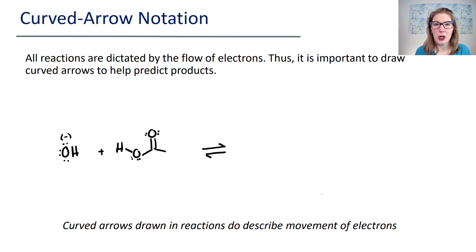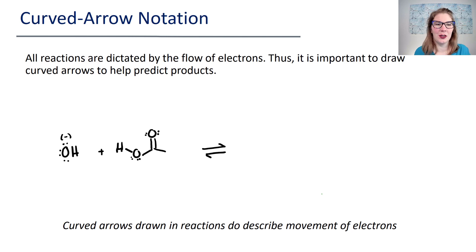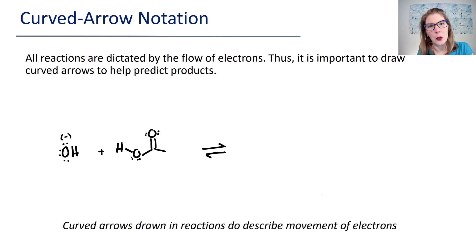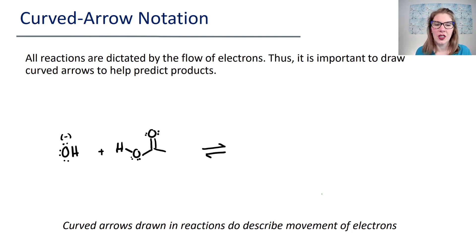In general chemistry, when you were predicting products, you were doing things like double displacement reactions, metathesis reactions, or simple redox reactions. These arrows are going to be like that idea — they are what helps you predict what the products of a reaction are.